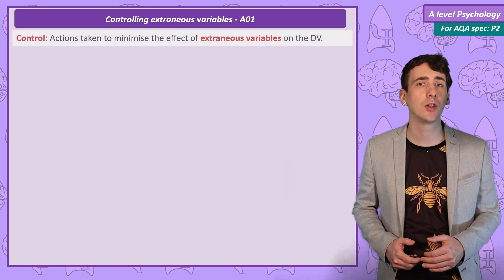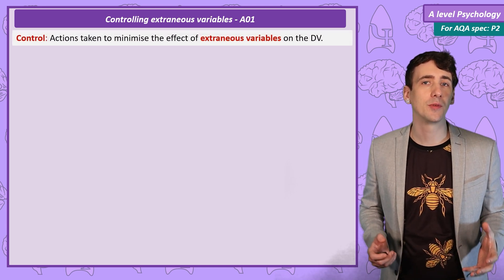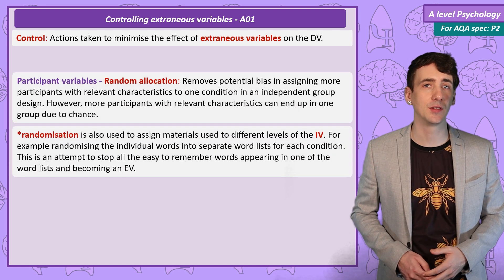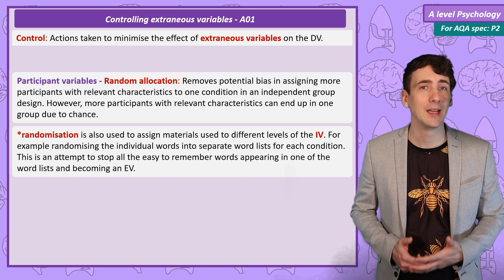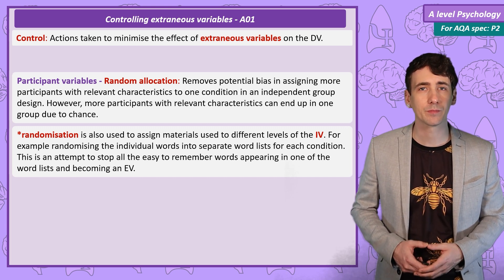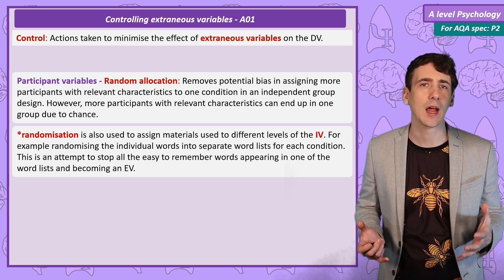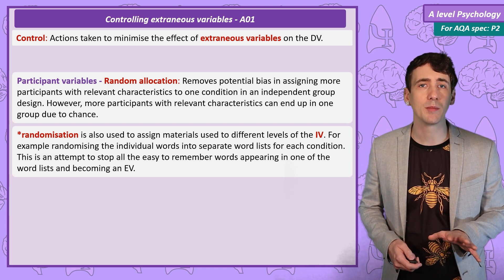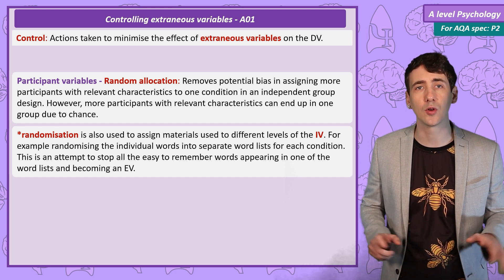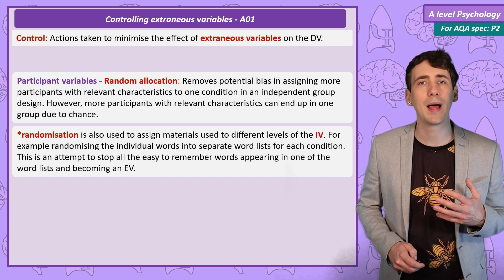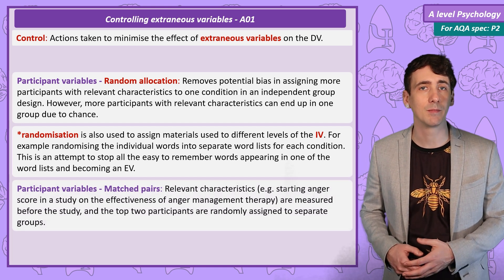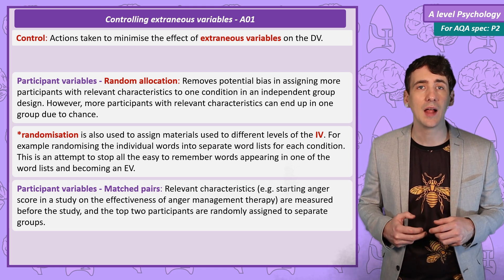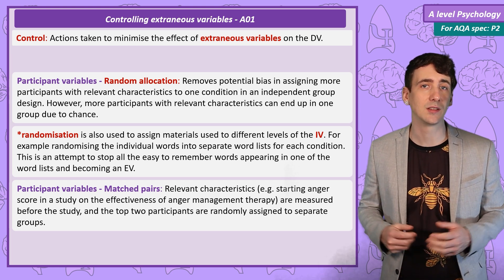Researchers who want to claim their results are valid are going to want to take actions to deal with extraneous variables. To control for participant variables, we can use random allocation and matched pairs. Independent groups designs should always use random allocation between groups, if possible, to control for participant variables — for example, pre-existing knowledge, skills, or characteristics like age and gender. If you use randomisation, you're likely to spread these variables out across the conditions, but you may still get unbalanced groups by chance. A better way to control participant variables is to run a matched pairs design — carefully measuring a participant variable before the study and then matching the highest score in one group with the next highest in the other, resulting in the participant variable being balanced between the groups.